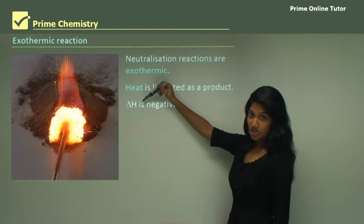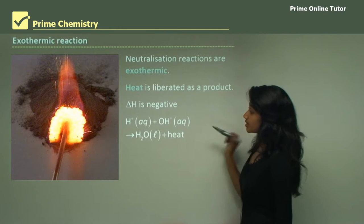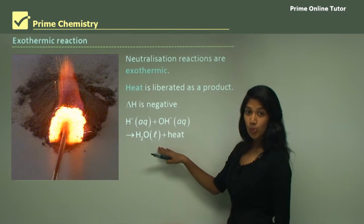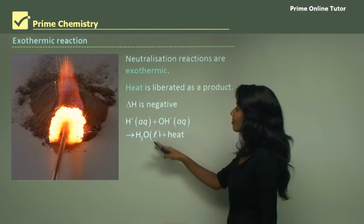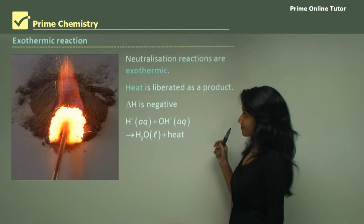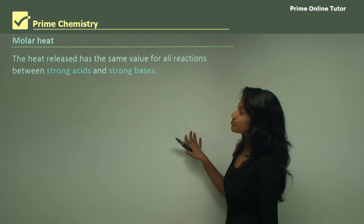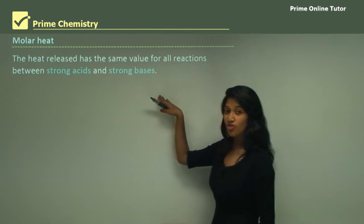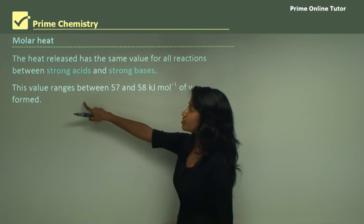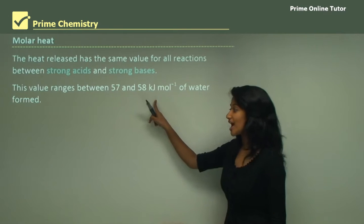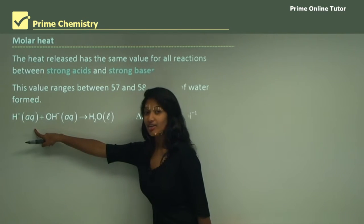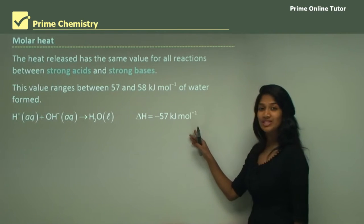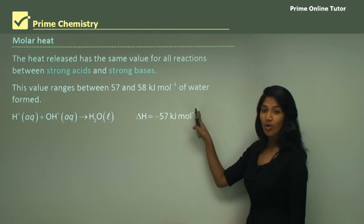The molar heat of neutralization is going to be negative. Here we have hydrogen ions reacting with hydroxide ions to form water and heat as a product — they release heat in the reaction. The heat released has the same value for all reactions between strong acids and strong bases, ranging between −57 and −58 kJ per mole. It's always −57 kJ per mole, and that's our molar heat of neutralization.